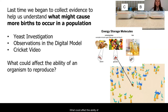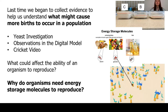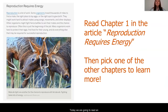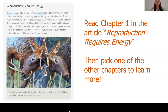What could affect the ability of an organism to reproduce? We know that it has something to do with energy. But why do these organisms need energy to reproduce, and where is this energy coming from? Today we are going to read an article titled Reproduction Requires Energy. In a moment, you are going to read chapter one with me, then you are going to pick one of the other chapters to learn more about.